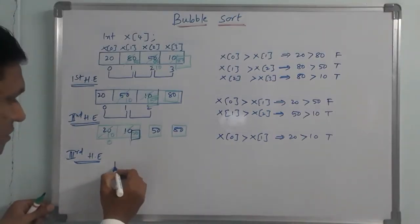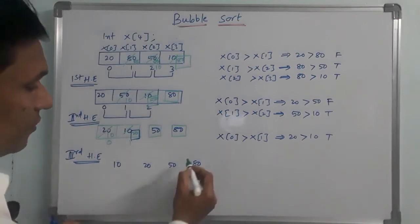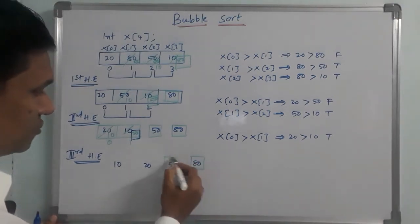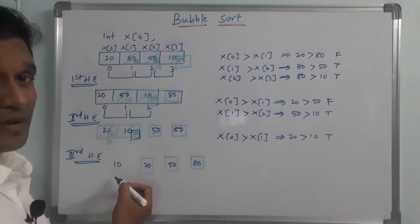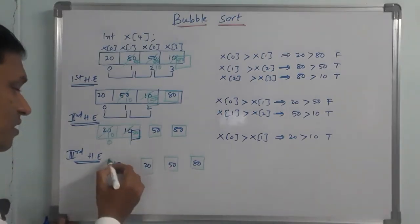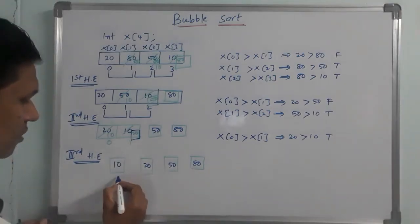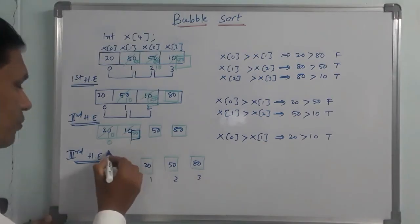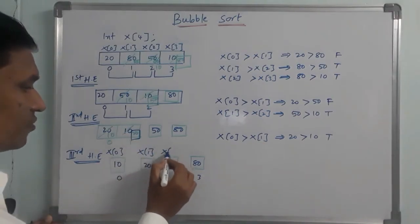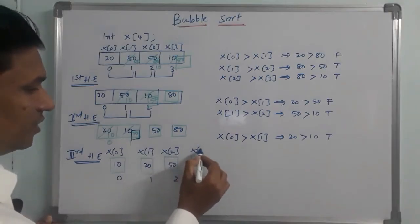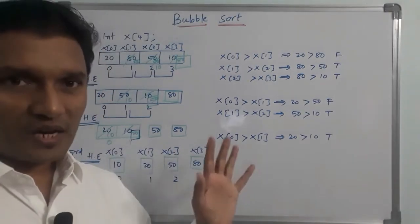After all passes, the final sorted list is: 0, 10, 20, 50, 80. After three passes, the array is fully sorted. This is the process of bubble sort.